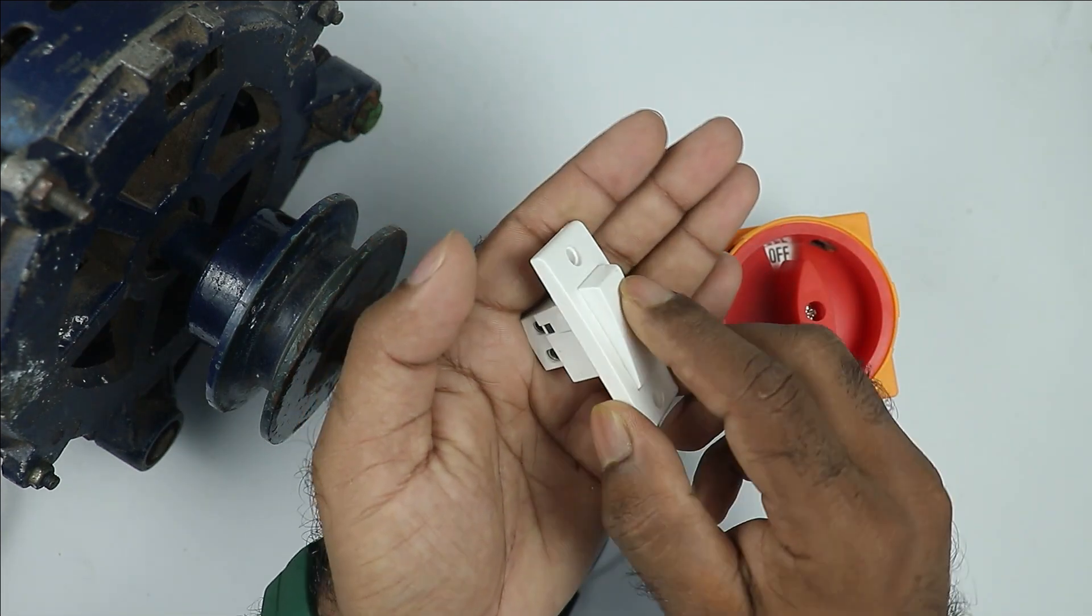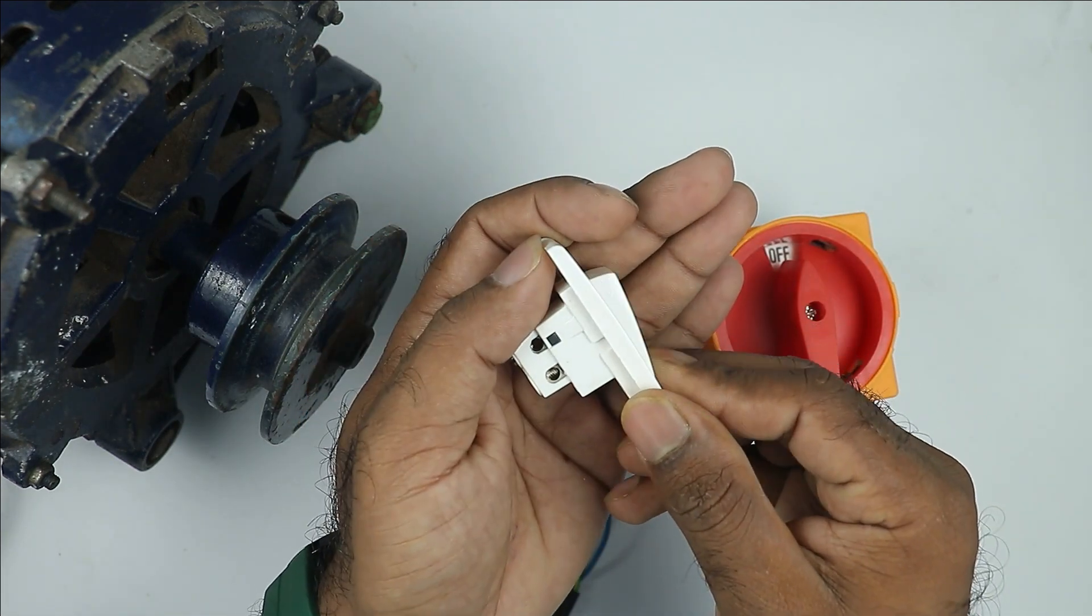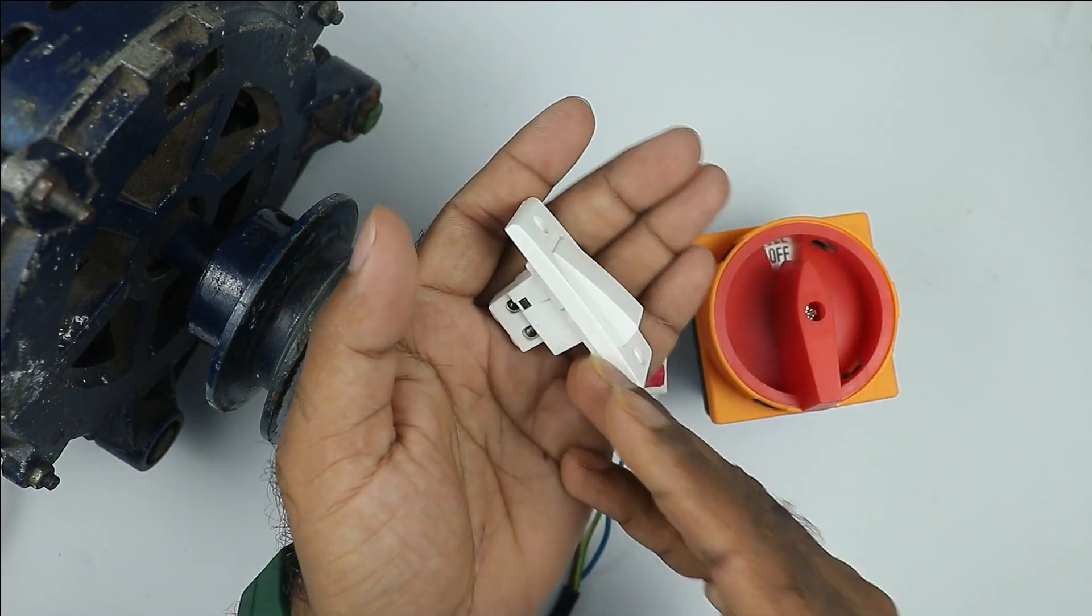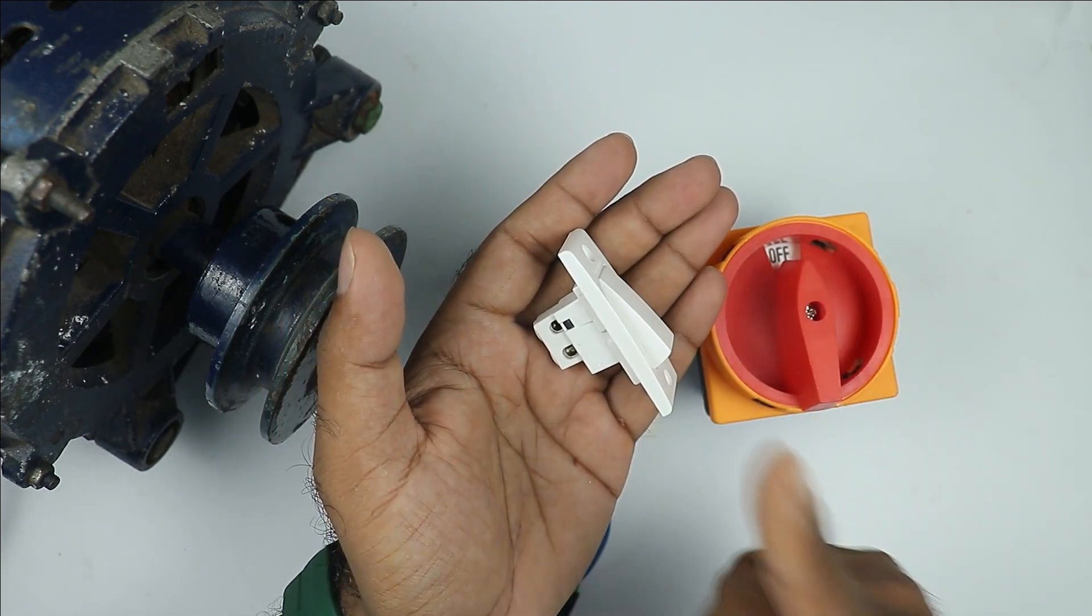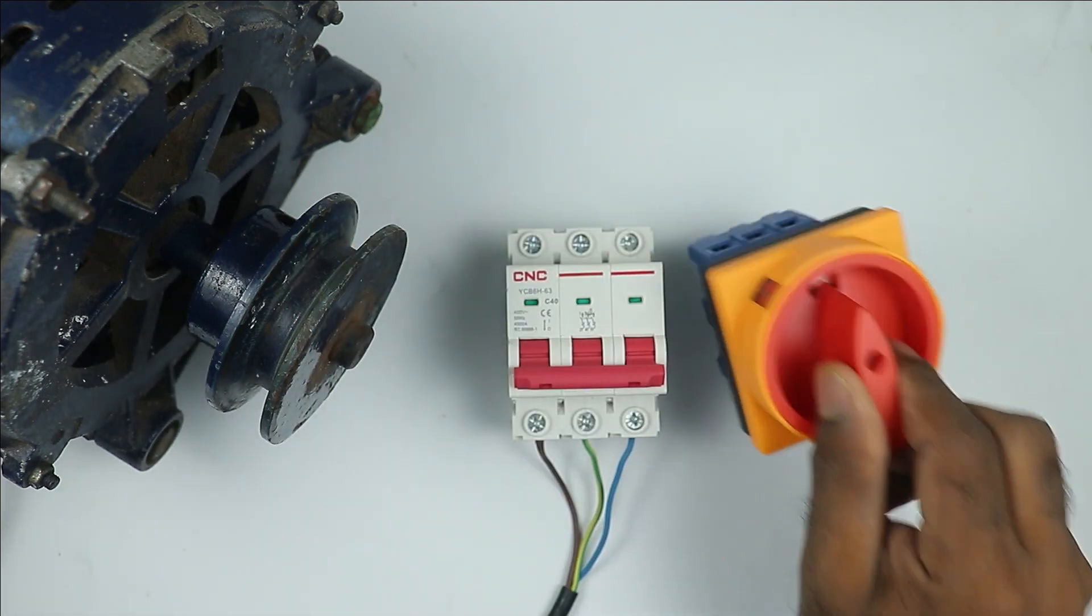The switch used normally in your home to turn on or off the bulb or fan is the same type as rotary switch. Only difference between the two is, this is single pole and this is three pole.